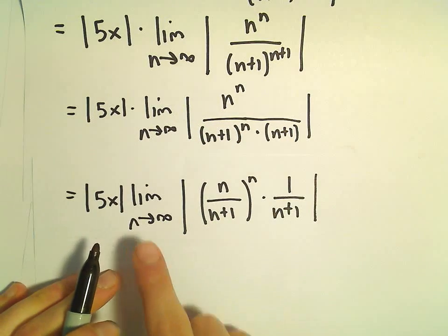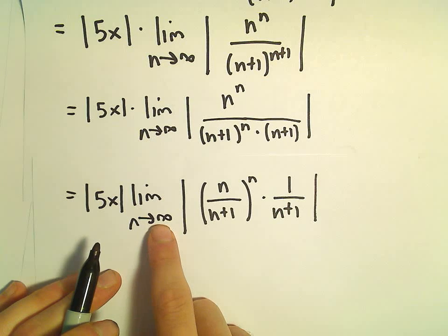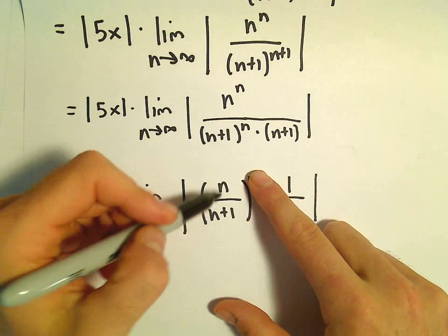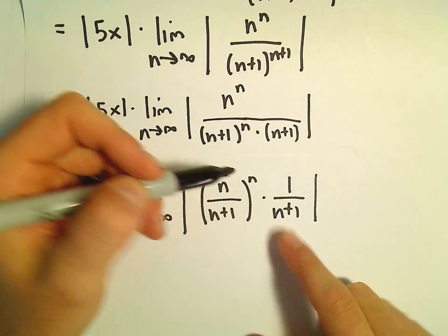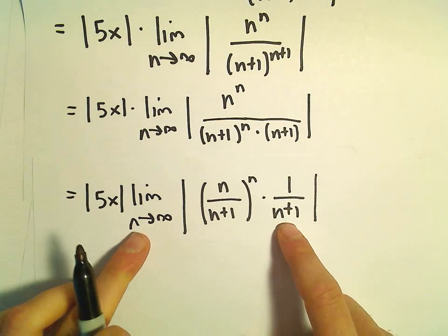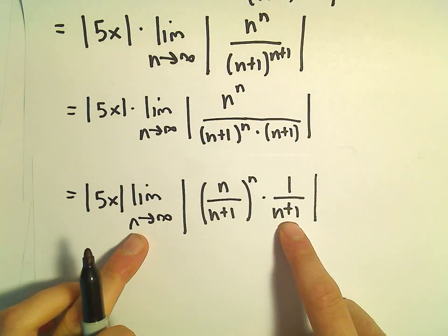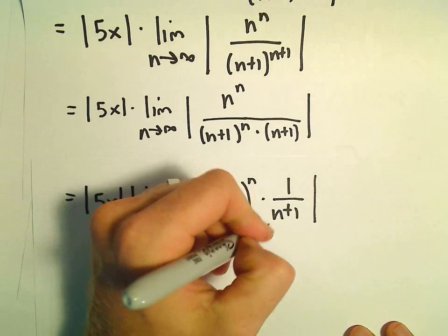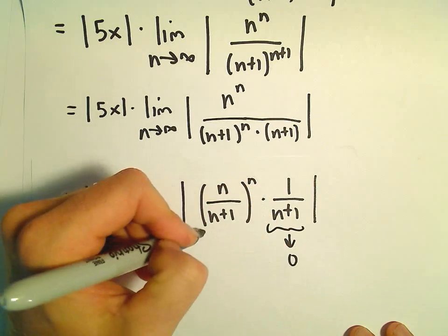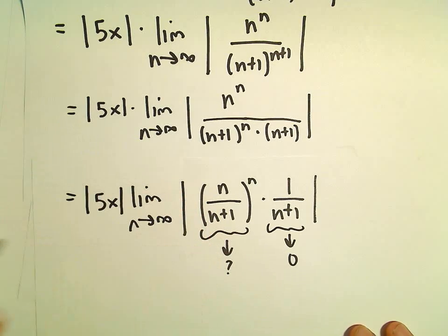Okay, well certainly as n goes to infinity, here we're going to have 1 raised to the infinity, which is indeterminate. Then we're going to have 1 over infinity, which is going to give us a 0. So this part is clearly going to 0, but this portion I'm a little bit unsure about.